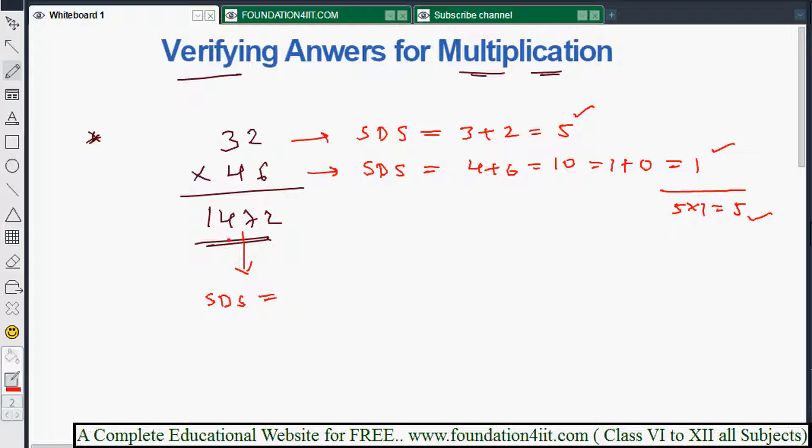For the solution also apply SDS. As a shortcut, 7 plus 2 is 9, so you can strike over. 1 plus 4 is 5. Here we got 5 and there also 5. Since SDS is tallied, the answer is correct.